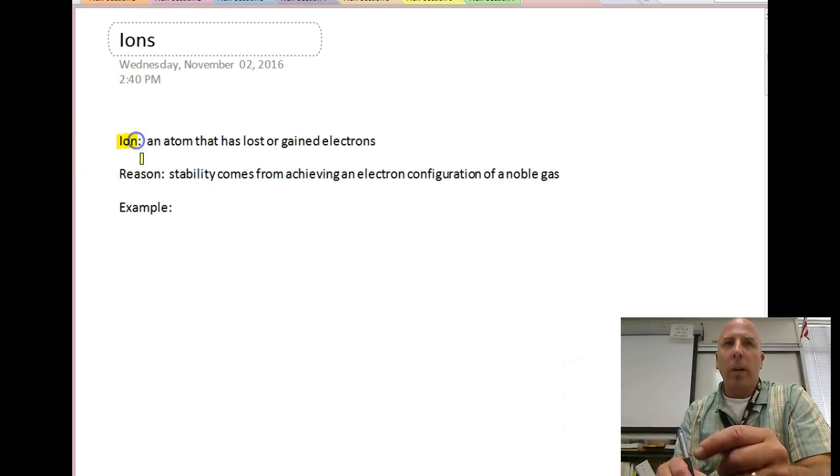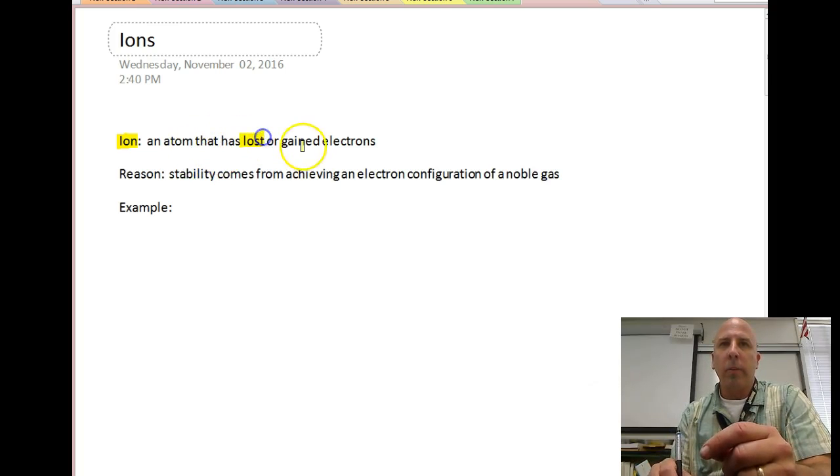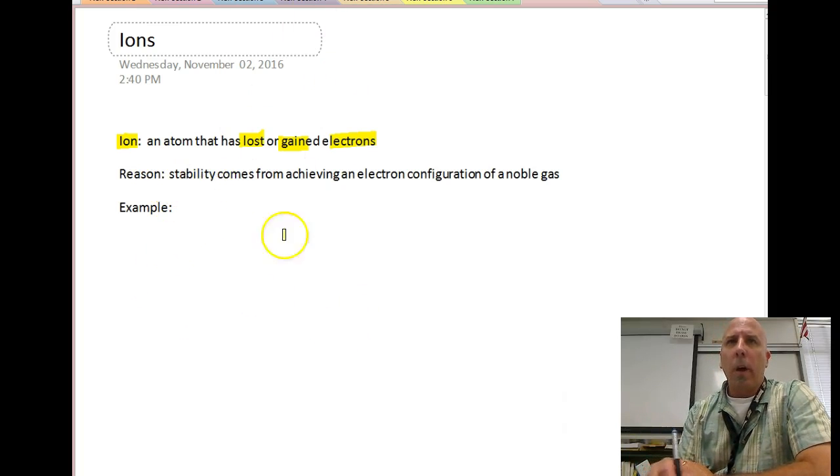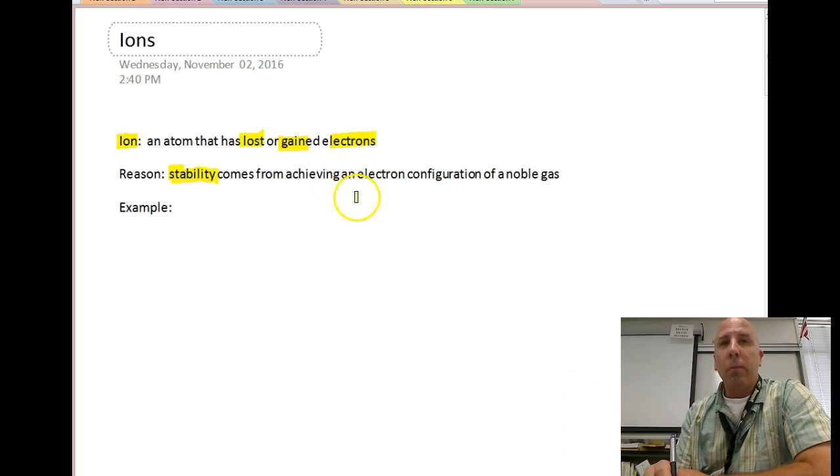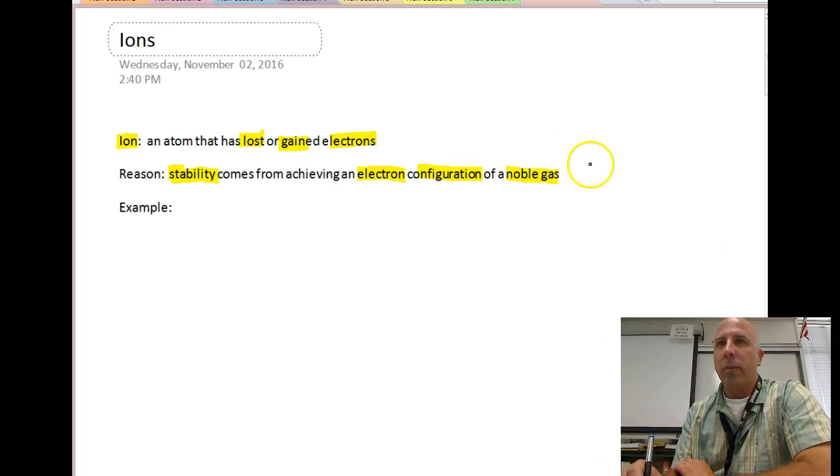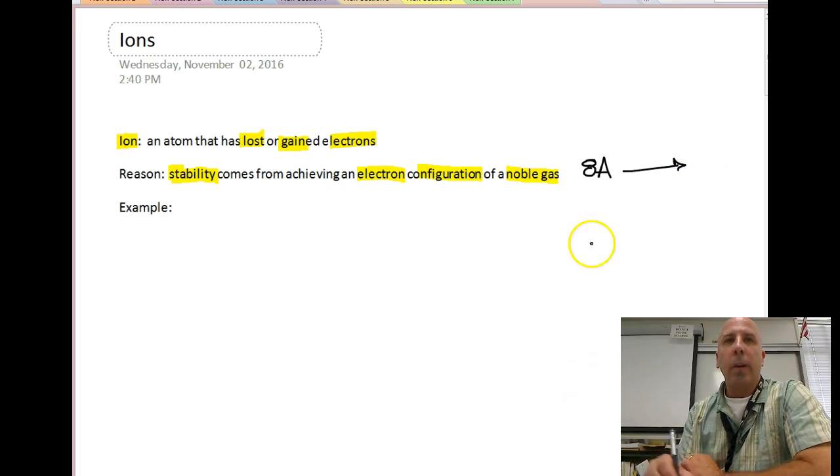So first off, an ion is going to be any atom that has lost or gained an electron. It might not just be one electron, it could be multiple electrons. The reason comes from stability. Many times neutral atoms are unstable. The way they become stable is they need to achieve an electron configuration of a noble gas, and we remember those noble gases were in column 8A all the way to the right of the periodic table.